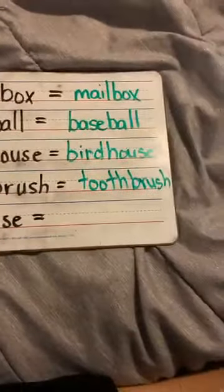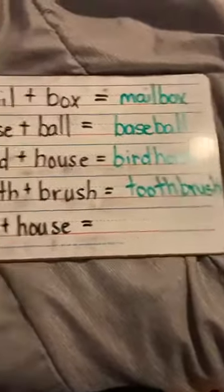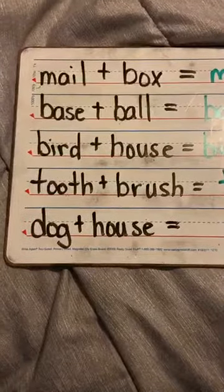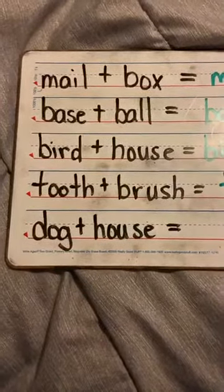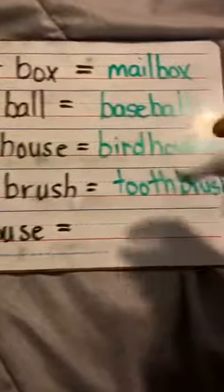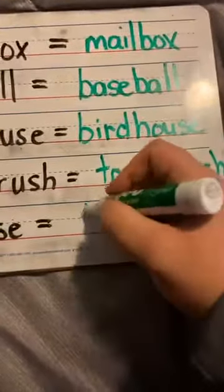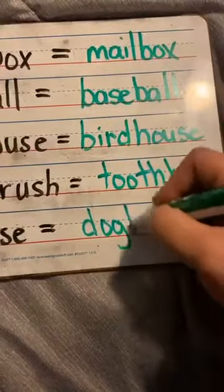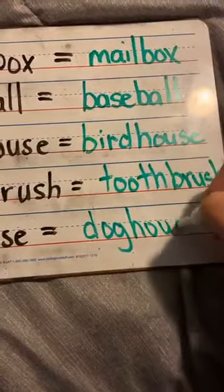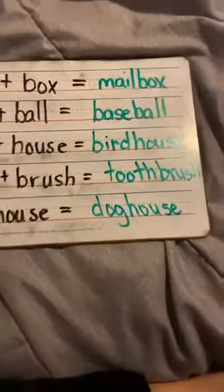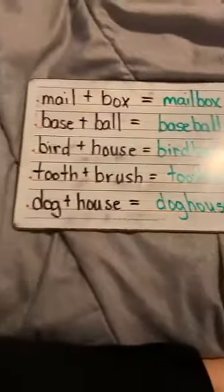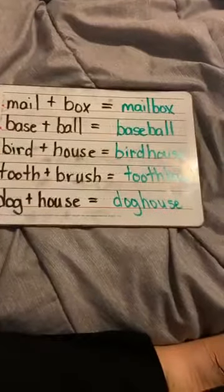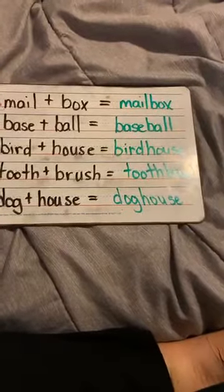That one almost didn't fit on my board — toothbrush, that's a long one. The next one, if I put dog plus house, I get what? You're right. Dog, house. So when you have two words and you put them together to make one word, that's a compound word.